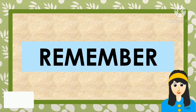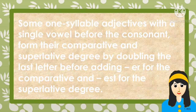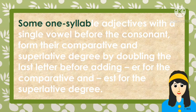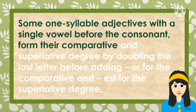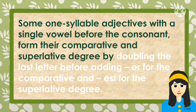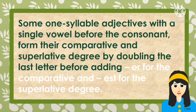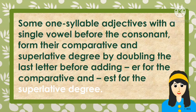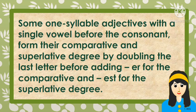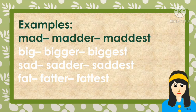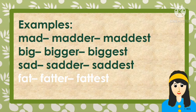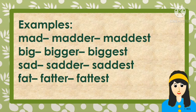Please remember what you have learned today. Some one-syllable adjectives with a single vowel before the final consonant form their comparative and superlative degree by doubling the last letter before adding -er or -est. Examples: 'mad' → 'madder' → 'maddest'; 'big' → 'bigger' → 'biggest'; 'sad' → 'sadder' → 'saddest'; 'fat' → 'fatter' → 'fattest.'